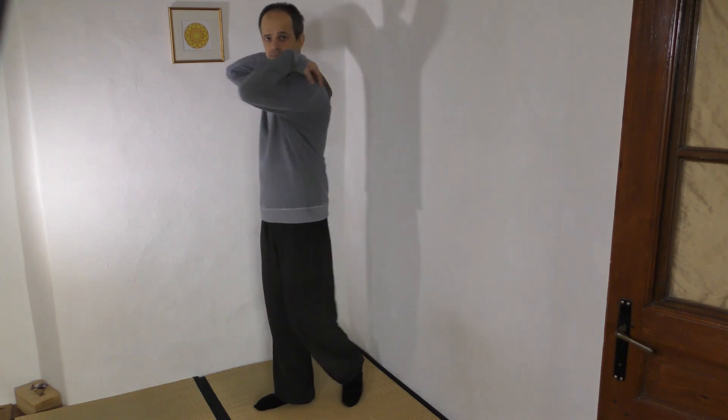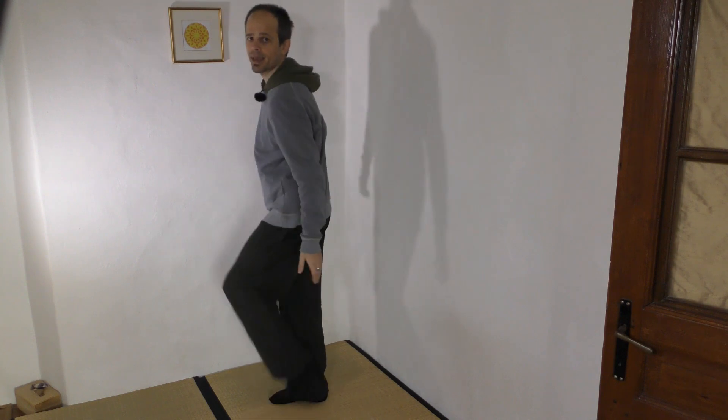Another way of leading the Qi downward is connecting three areas on the back side of the body. Three areas that we should connect are shoulder blades, your buttocks and heels.